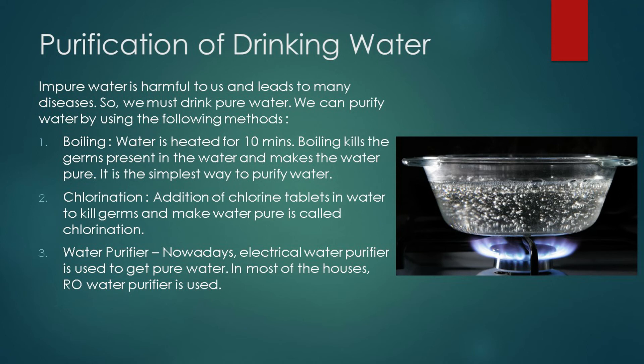We can purify water by the following methods: boiling, chlorination, and water purifier. In boiling, water is heated for 10 to 15 minutes — boiling kills the germs present in the water and makes it pure. It is the simplest way to purify water. The second method is chlorination: adding chlorine tablets to water to kill germs and make it pure is called chlorination.